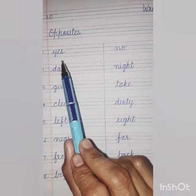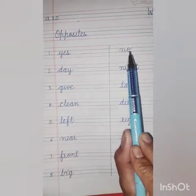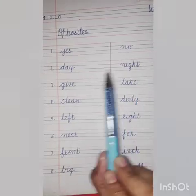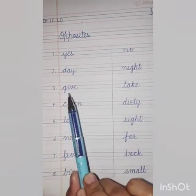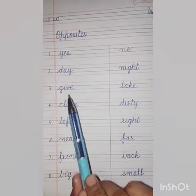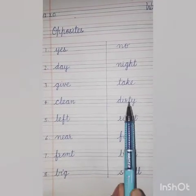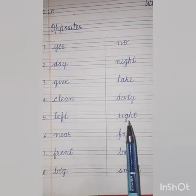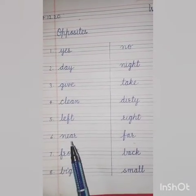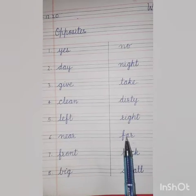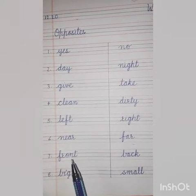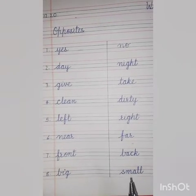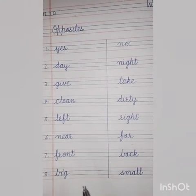One more time. Yes — No. No — Yes. Day — Night. Night — Day. Give — Take. Take — Give. Clean — Dirty. Dirty — Clean. Left — Right. Right — Left. Near — Far. Far — Near. Front — Back. Back — Front. Big — Small. Small — Big.